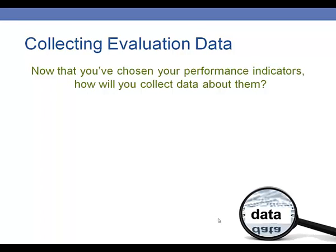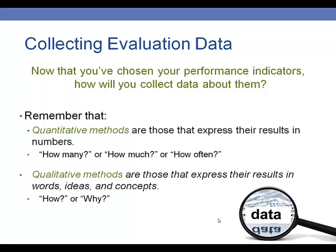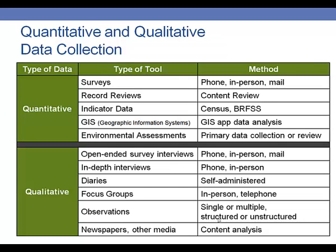Now that you've chosen your performance indicators, how are you going to collect information about them so that you know the degree of change that your program is causing? You have two basic options. Quantitative methods are those that express your results in numbers — they'll help you answer the questions: how many, how much, or how often. Qualitative methods express their results in words, ideas, and concepts — they'll answer the questions: how, and why. This table provides a brief snapshot of some of the options available to you for quantitative and qualitative data collection.